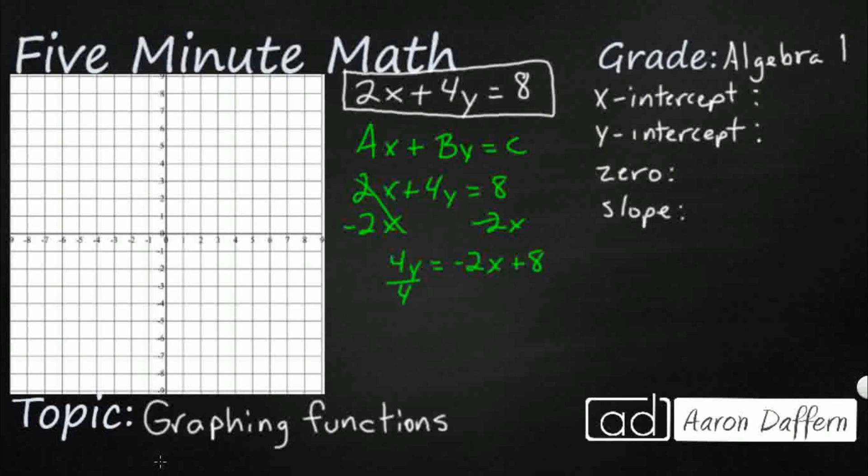And then let's just divide the whole thing by 4s. We'll go ahead and distribute that out. It's y equals negative. And then we've got 2x over 4 plus 8 over 4. So that's going to end up being negative 1 half x plus 2.